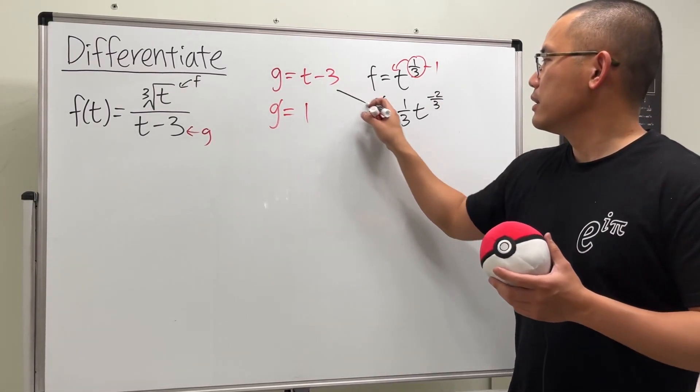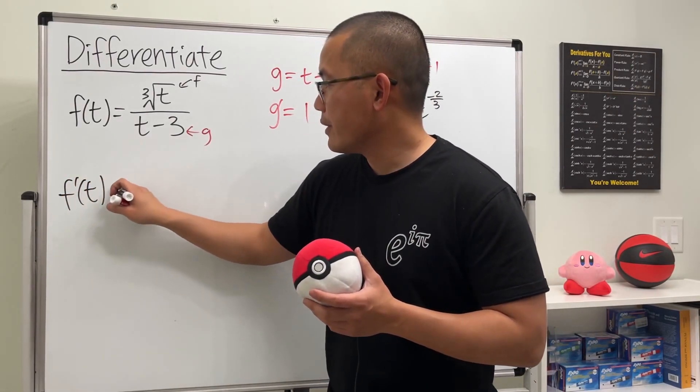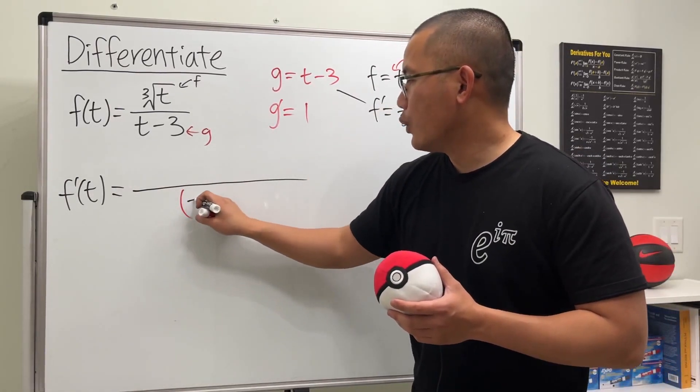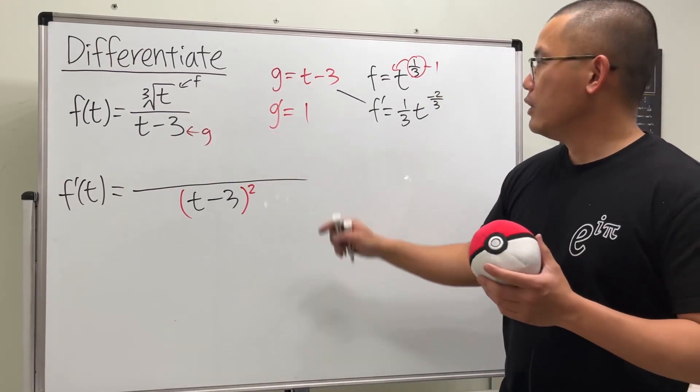Now we can construct our answer. And of course, this is the quotient rule. Let me write this down before we forget. Let's square the bottom first, so here we have parentheses with t minus 3 inside, and then we square that.